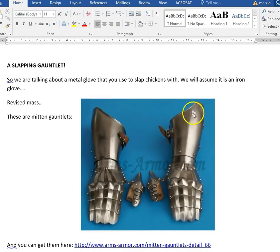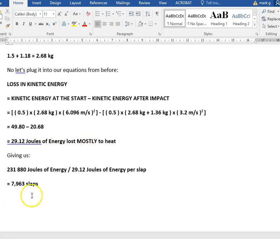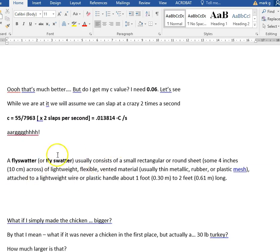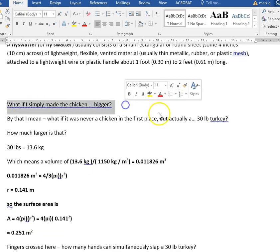What was my next plan? I tried out maybe a slapping gauntlet. Perhaps I just need to increase the amount of energy produced by one slap. Didn't work. Didn't even get close. I worked out all the calculations. If anything, it made it worse. So I considered possible fly swatters. But then, what if I simply made the chicken bigger?